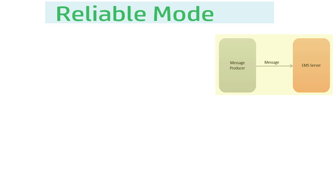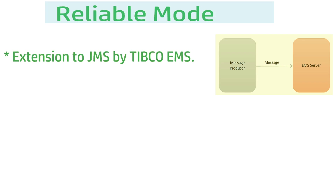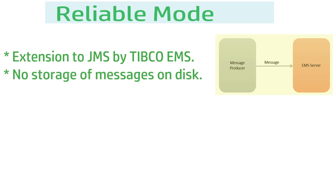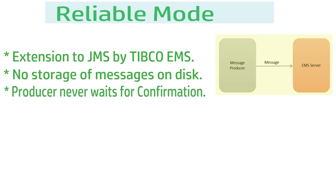The third and final delivery mode is reliable mode. The producer sends a message to the EMS server and simply relies on it — no confirmation is received. This is the simplest mechanism and is a TIBCO-specific customization or extension to the standard JMS delivery modes. Like non-persistent mode, there is no storage of messages to disk in reliable mode.